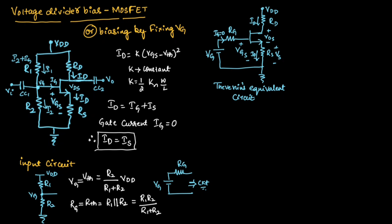Now let us apply KVL to input side. If you apply KVL to input side, we will get Vg minus Ig Rg minus Vgs minus Id Rs equals 0. Here Ig Rg will be equal to 0 since Ig is assumed to be 0. So we can write Vg minus Vgs minus Id Rs equals 0.